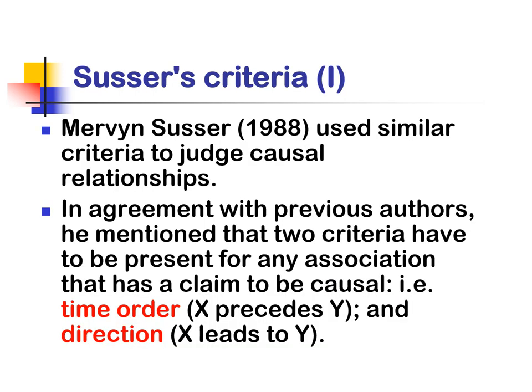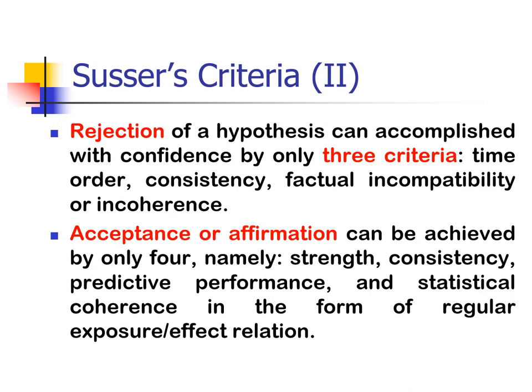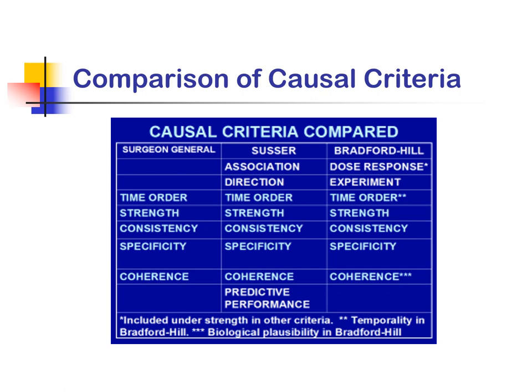Susser's criteria uses similar criteria to judge causal relationships. Two criteria must be present for any association that claims to be causal: time order and direction. Rejection of a hypothesis can be accomplished with confidence by only three criteria: time order, consistency, and factual incompatibility or incoherence. Acceptance can be achieved by only four: strength, consistency, predictive performance, and statistical coherence in the form of a regular exposure-effect relation. This is compared with Hill's criteria, where the key shared elements are time order, strength, consistency, specificity, and coherence.